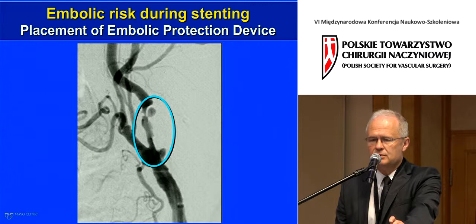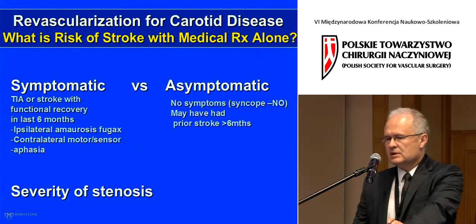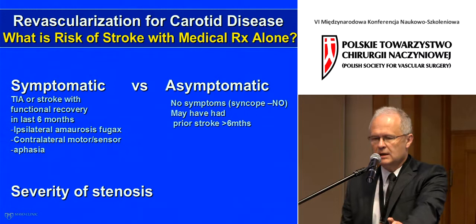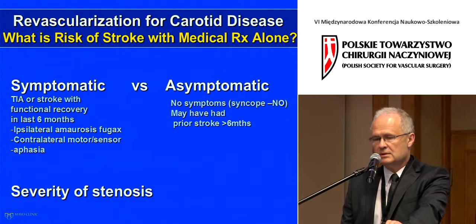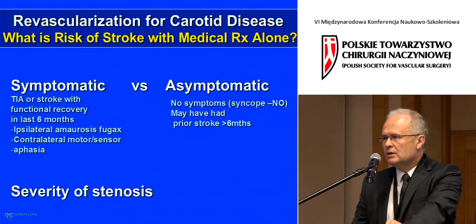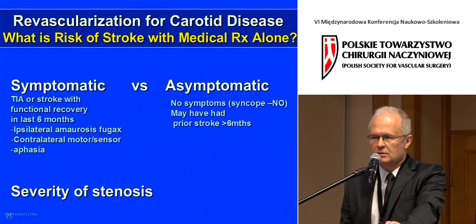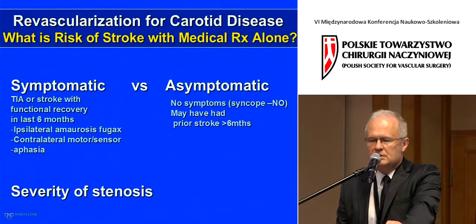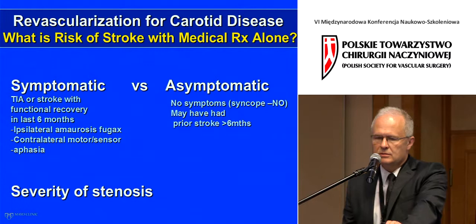We assess risk by looking at two main aspects: symptomatology and severity of stenosis. Patients who are symptomatic have a much higher risk of another stroke, particularly within the next six months. The majority of meta-analyses show that for symptomatic patients the crucial time to intervene is within the first two weeks after the first episode, versus asymptomatic patients where the risk of stroke is significantly lower.